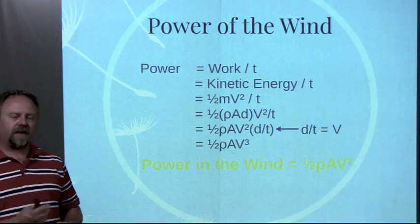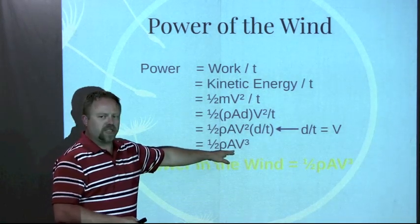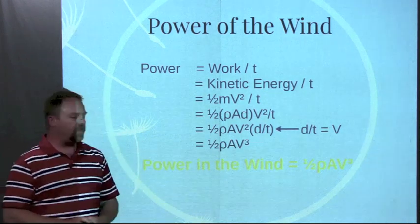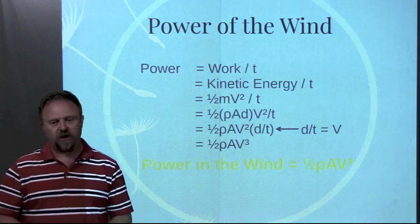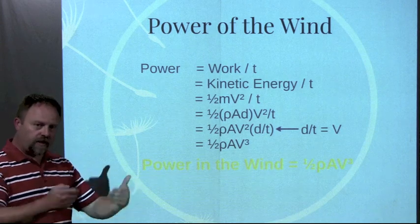So we can lump that into a velocity term. We have this one-half times the density of the air, cross-sectional area of the wind turbine, and the velocity of the air cubed. That would be our calculation for power that's available in the wind that's moving.